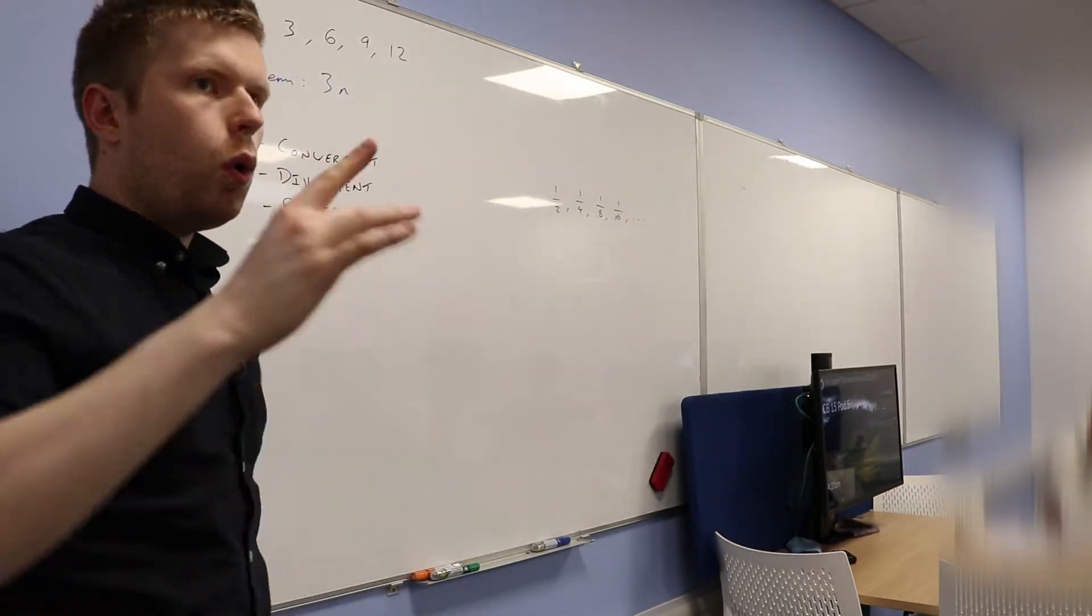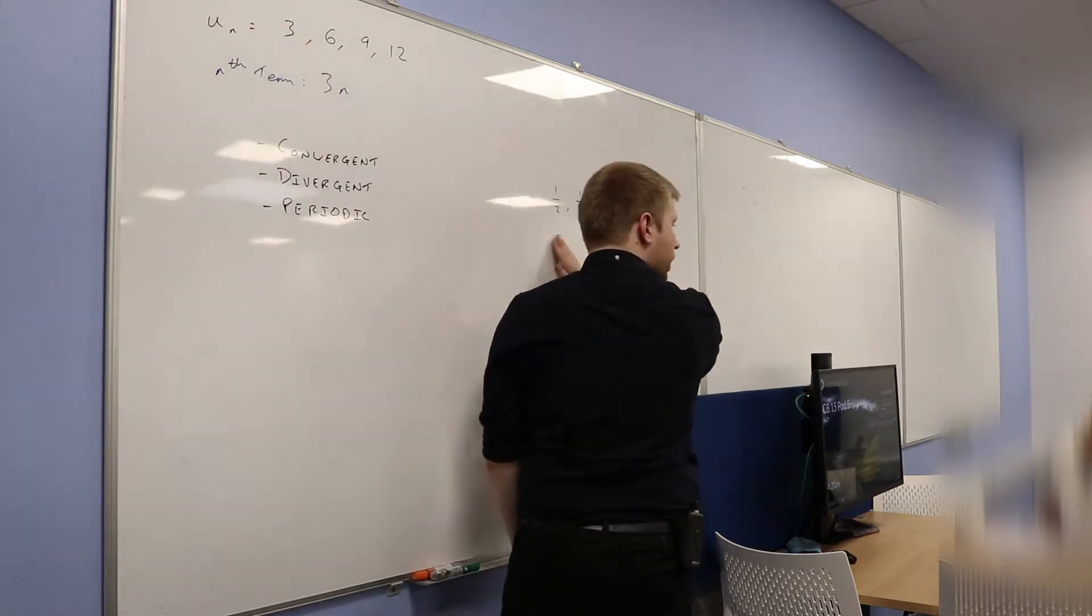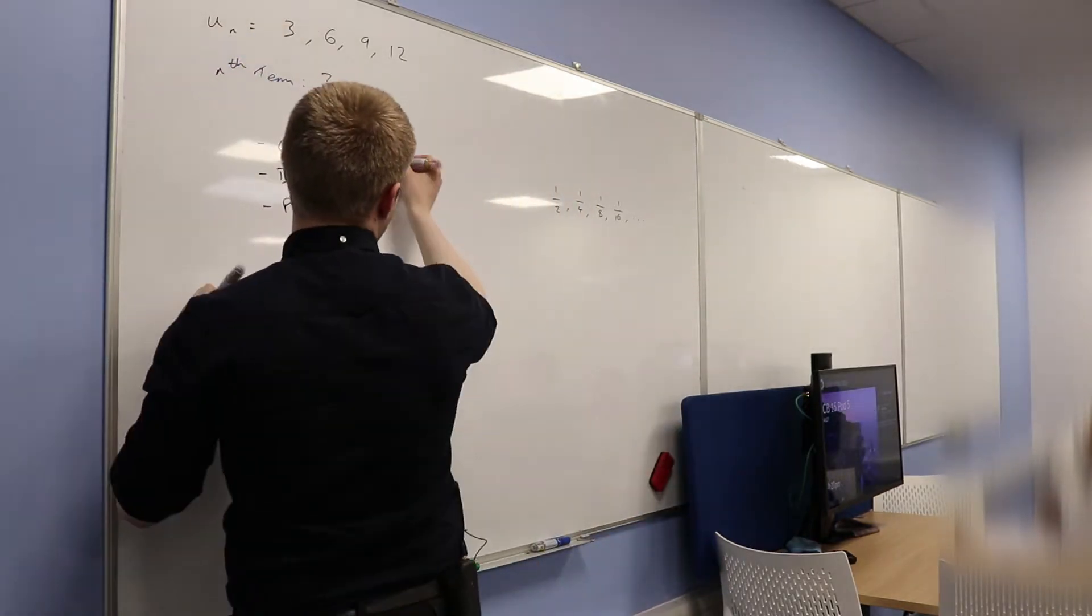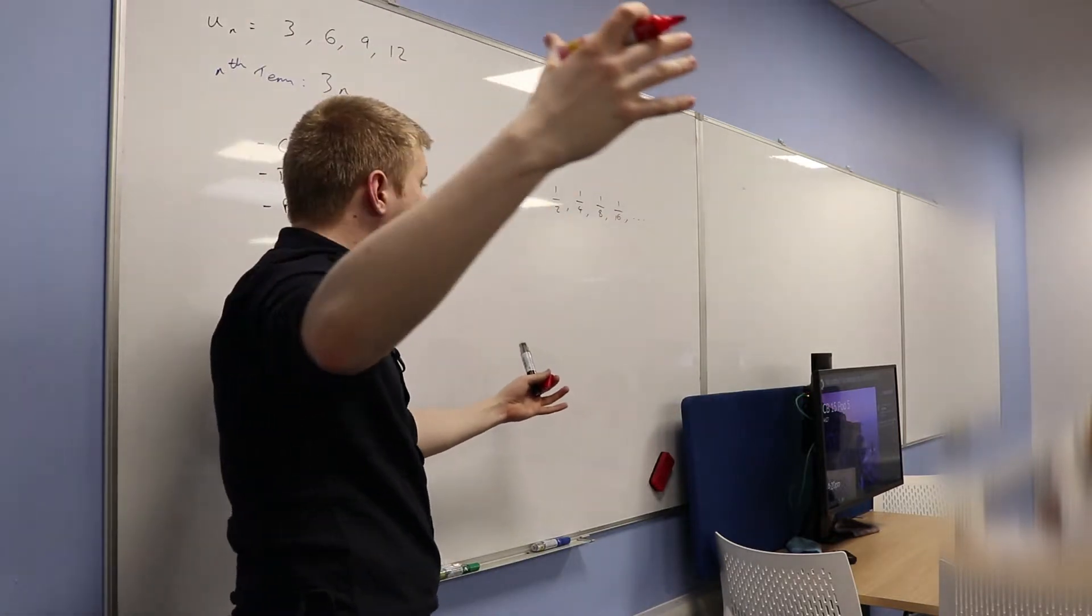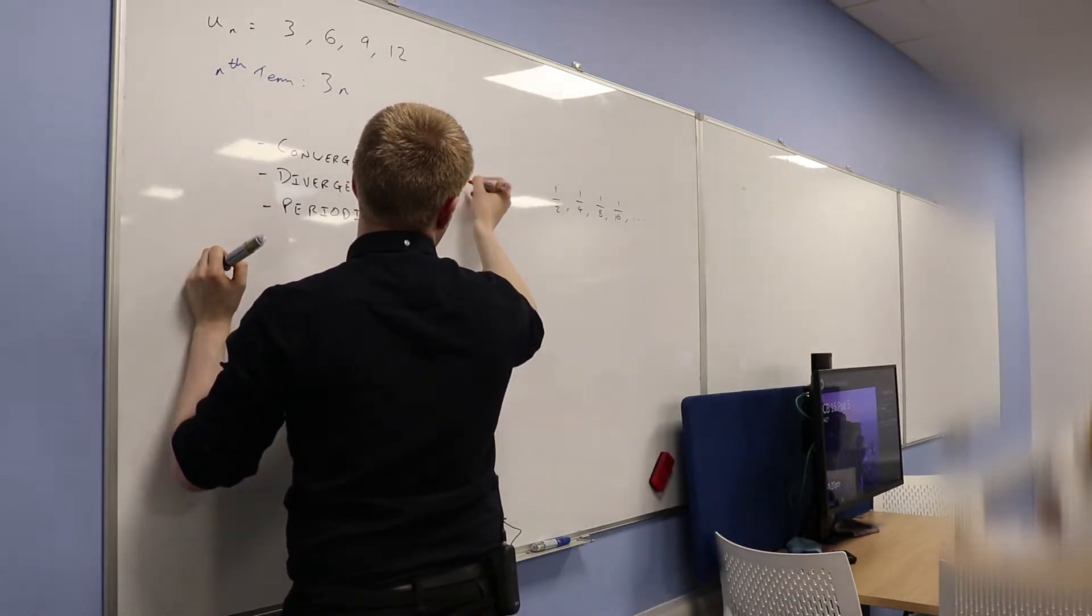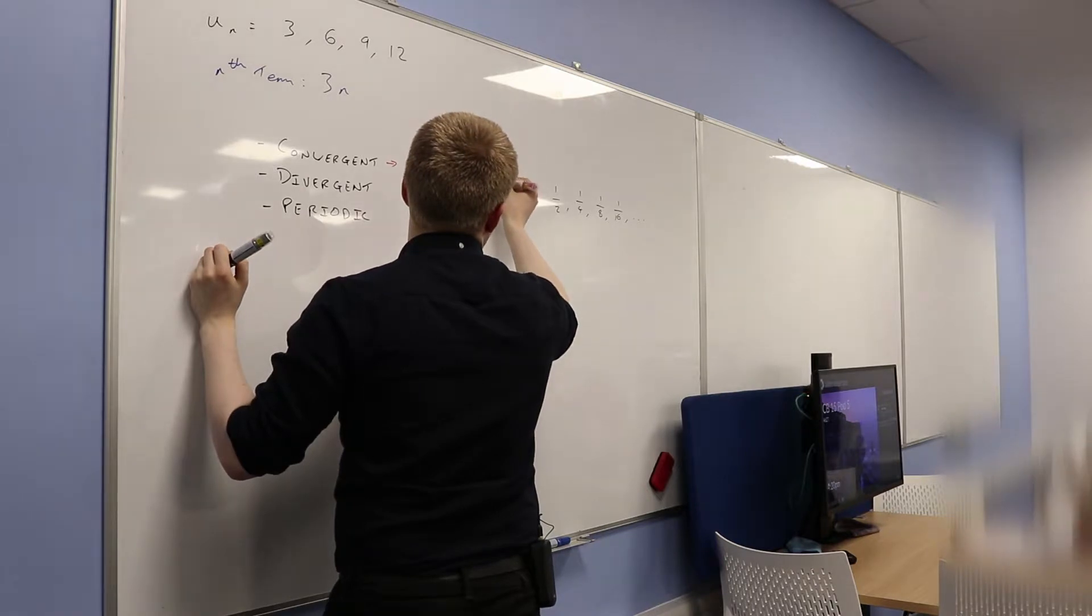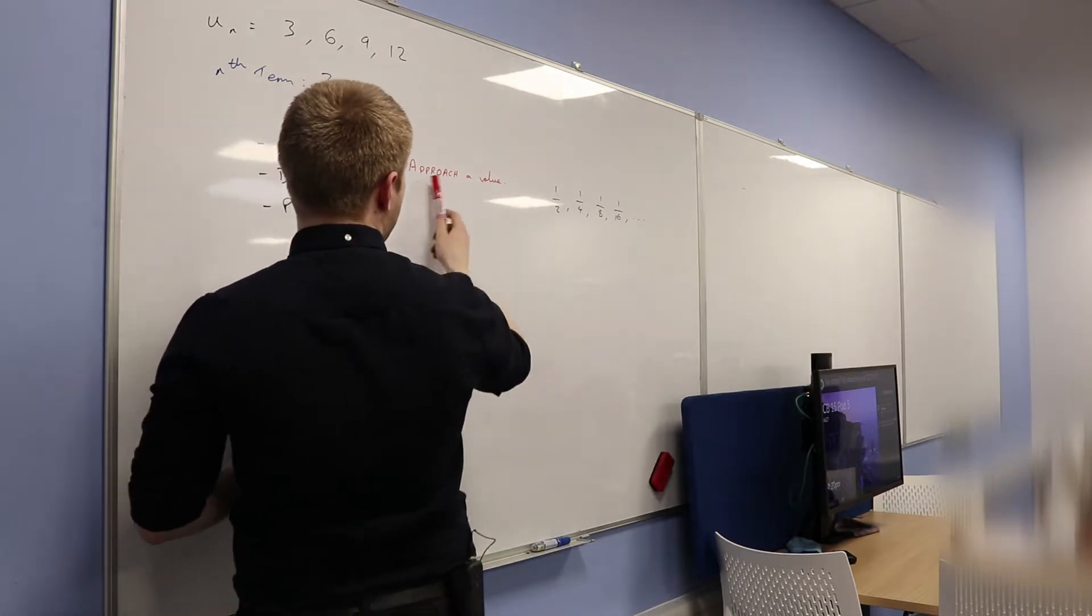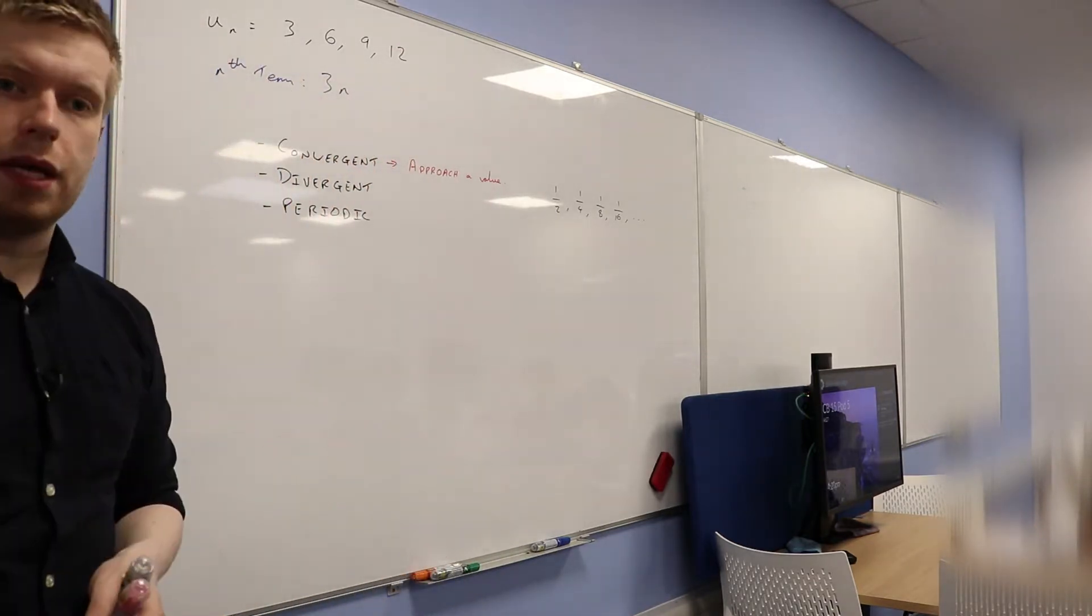But not all sequences are necessarily getting smaller. In other words, they're not always approaching 0. All I'm looking for with convergence is that they just approach some value that is not really big. So they approach a value that isn't infinity. But then again, infinity isn't really a number. It's a concept. So you just approach some particular number. All right? That's what convergent means.